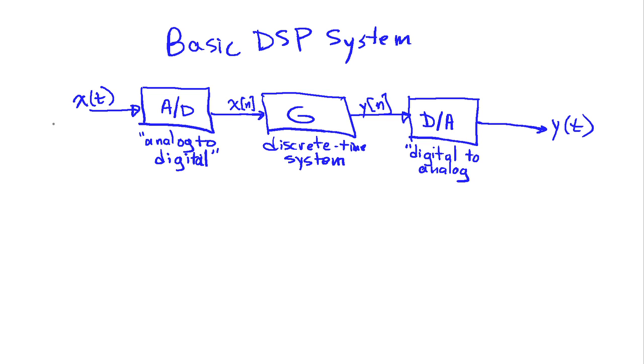And this whole thing, if I put a box around this, so that's a basic DSP system. Now I've drawn this with time as the independent variable, but it can just as well be space as in an image, or sometimes we might have multiple antennas like in a cell phone system or a phased array radar and so on. There's lots of different dimensions here, but usually these are involved.